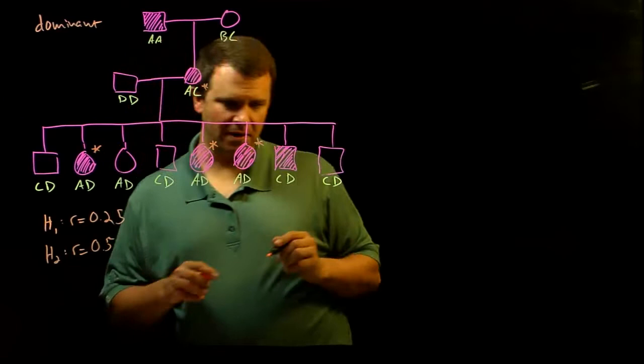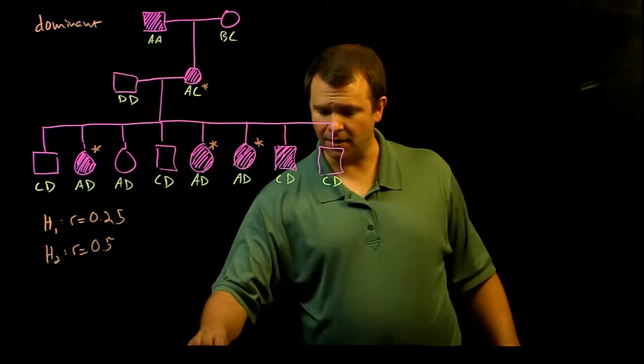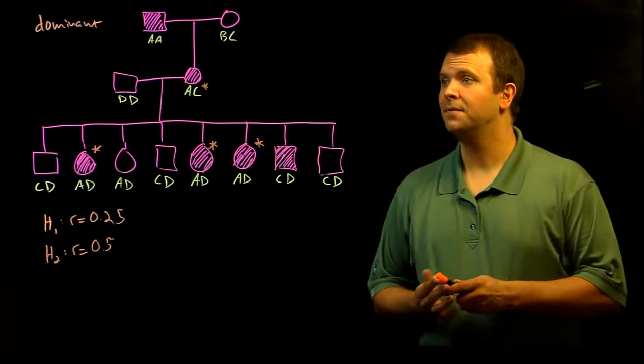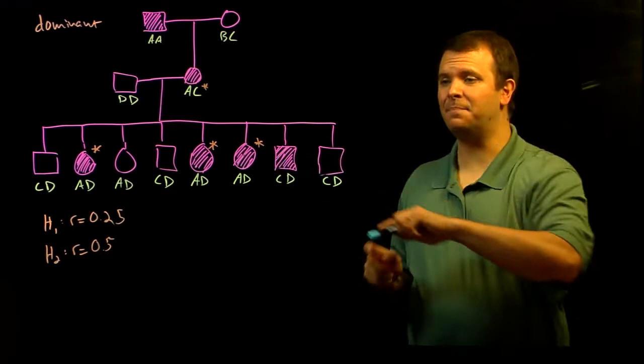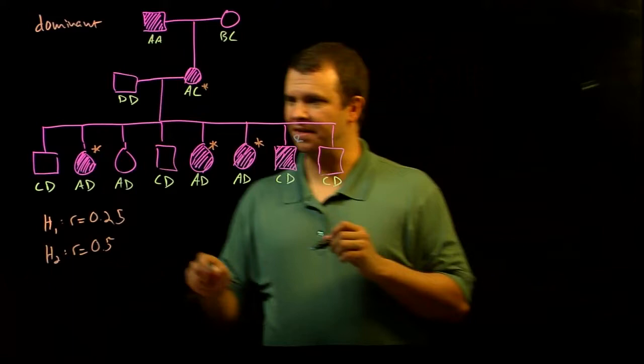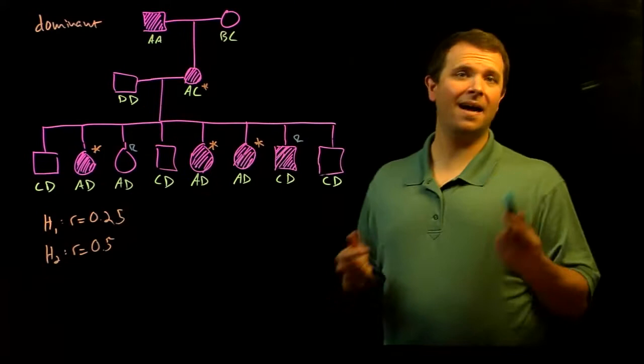And there are two where there appears to have been some sort of recombination. Here, the disease gene has ended up in this individual, but they don't have the A allele. And here, this individual has the A allele, but they did not end up with this genetic disease.